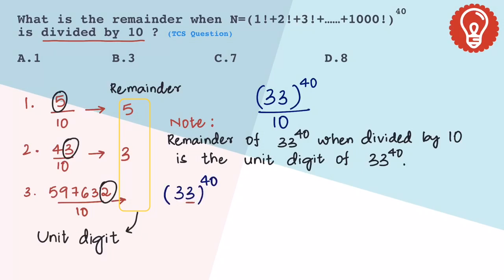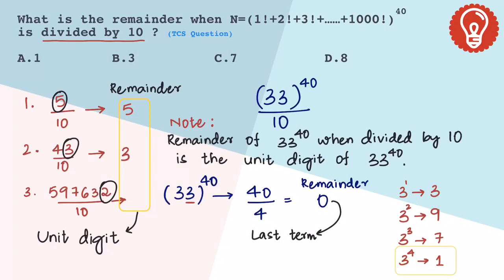Finally, to find the unit place, as 3 is in the unit place of the base, step 1 is to take the power 40 divided by the cyclicity of 4, because the cyclicity of 3 is 4, and find the remainder. The remainder is 0, which refers to the last term in 3 power n series, and the last term in 3 power n series is 1.